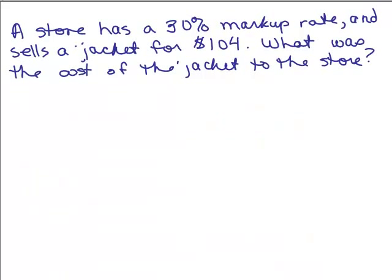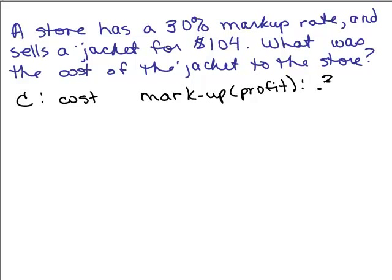All right, so here's the same problem. A store has a 30% markup rate and sells a jacket for $104. What's the cost of the jacket? Remember the markup rate is a percentage of the original cost, and we don't know the cost. So we have to use a variable. We let C be the cost. The markup is 30% of the cost. So how do we write 30% as a decimal? It's .3, and we multiply that by the cost, right? It's 30% of the cost, so .3C.